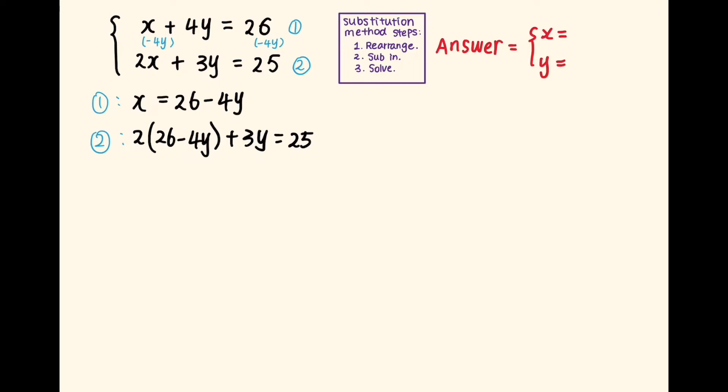So let's solve for y. Since there is a 2 outside the brackets and the operation is multiplication, according to distributive law, when expanding the brackets, we need to times every term in the brackets by 2. So expanding the brackets, we have 2 times 26 minus 2 times 4y plus 3y is equal to 25. 2 times 26 is equal to 52. Negative 2 times 4y is equal to negative 8y plus 3y is equal to 25.